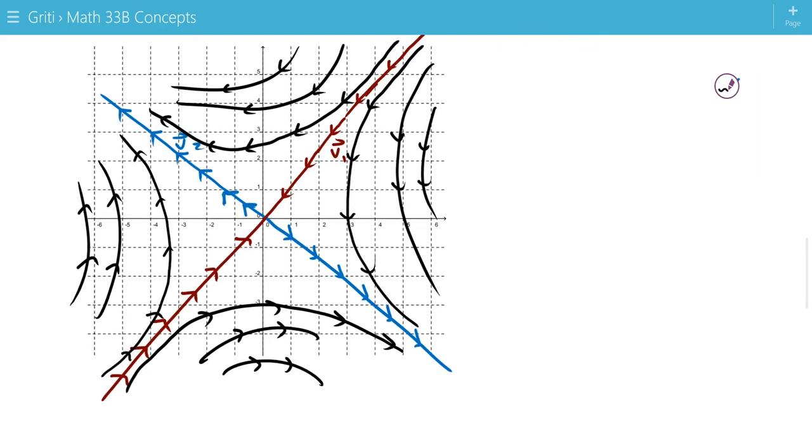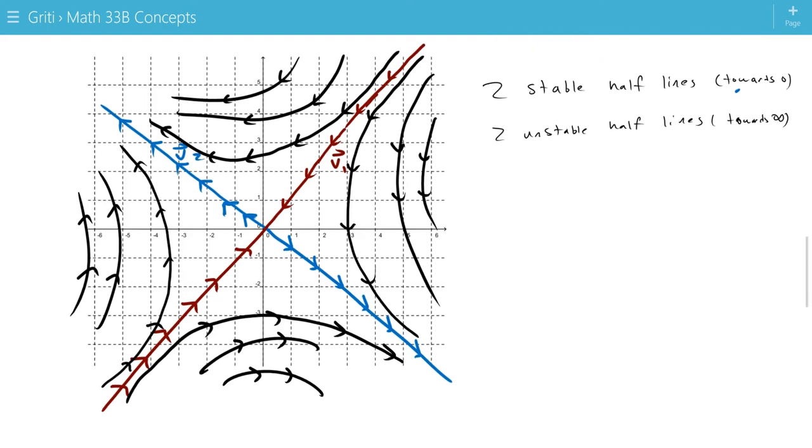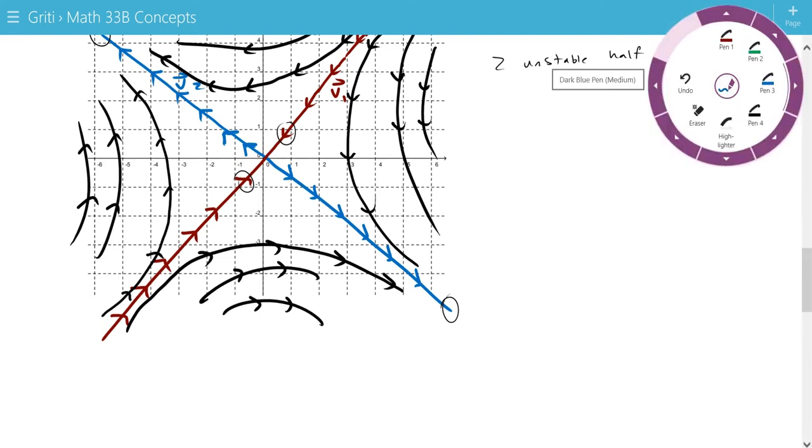For this case, we have two stable half lines and two unstable half lines. Stable just means we're moving towards 0, and unstable means we're moving towards infinity. These are the ones moving away from infinity, and these are the ones moving towards 0.